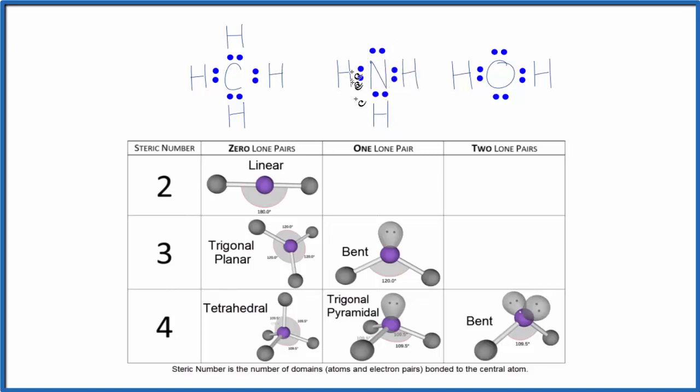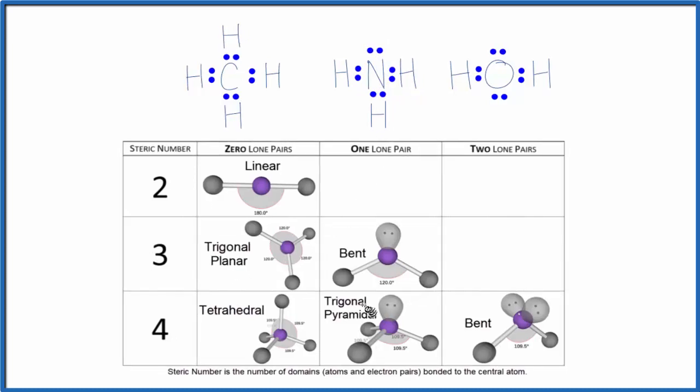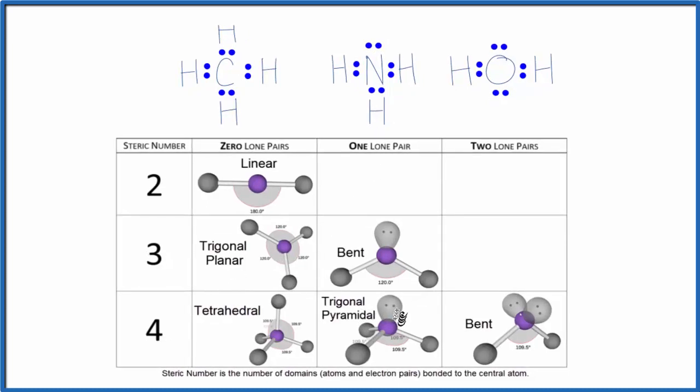One lone pair, steric number of four - trigonal pyramidal. This lone pair here changes the shape, but we still have a bond angle of 109.5 degrees, because we're considering that these four things are spreading out and pushing against each other, giving us this 109.5 degree bond angle.